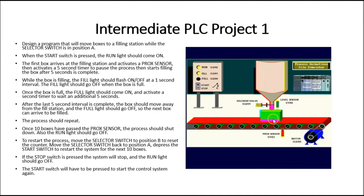First, we'll design a program that will move boxes to a filling station while the selector switch is in the A position. Notice the selector switch on our panel — in the A position it holds that value high, and in the B position it holds that value high. When the start switch is pressed, the run light should come on.